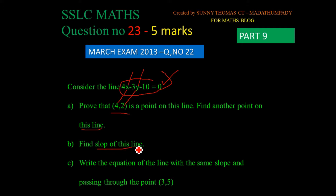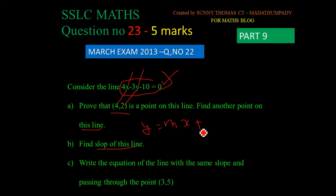This is a line. We will find the slope of this line. That is, y equals mx plus c. When x equals 0, we get the slope m. Write the equation of the line with the same slope passing through point 3,5.